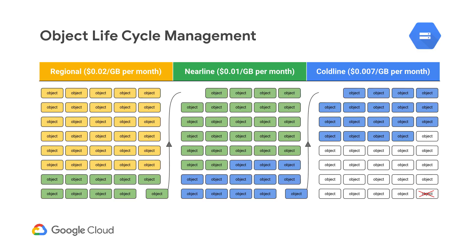Now, lifecycle management is an easy and simple way to automatically move objects from one storage class to another by simply setting a set of rules, instead of having to do the process manually. The idea is that if you are not accessing objects within specific time periods, there is a substantial amount of money that you could save by taking advantage of the different storage classes.